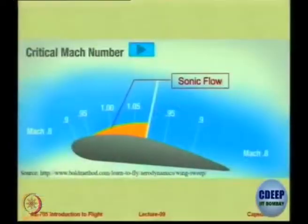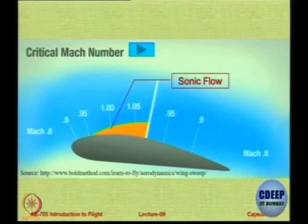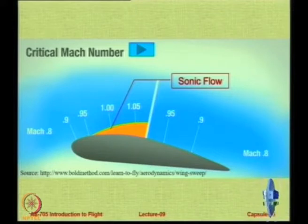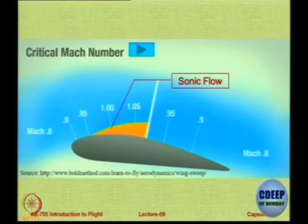The lowest free stream Mach number at which sonic conditions are first reached anywhere on the aerofoil is called the critical Mach number. It is critical because from that point onwards there will be some portion of the aerofoil which will have sonic flow — local Mach number more than one. Sonic flow is no problem except that it results in a shock wave, and across the shock wave there are serious problems.